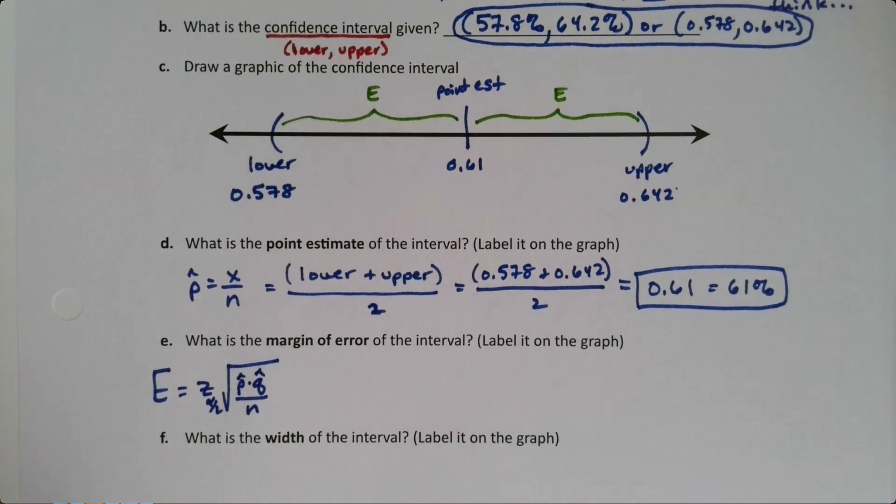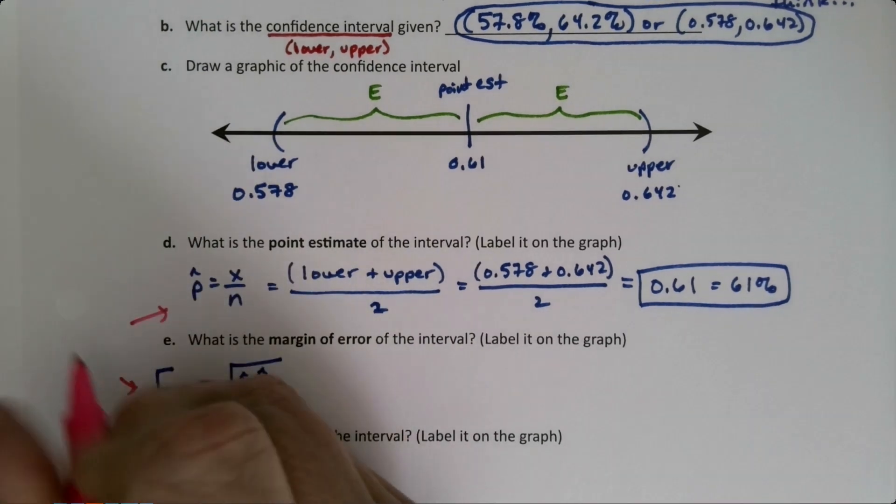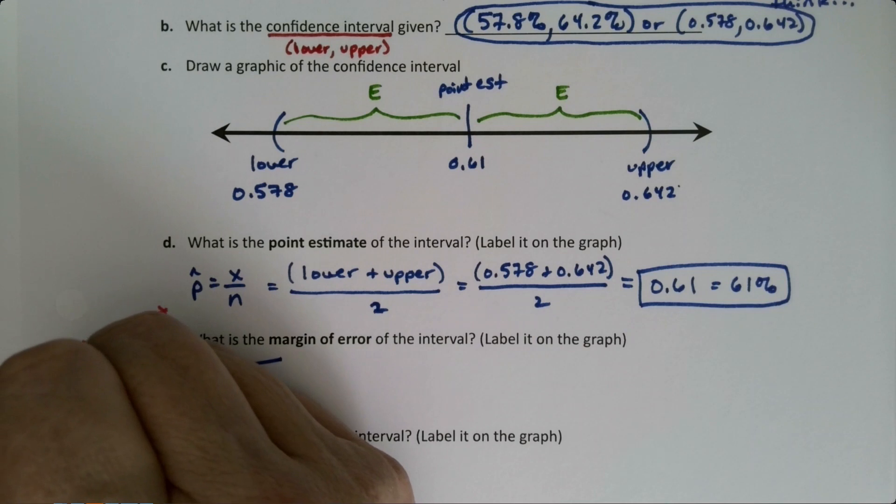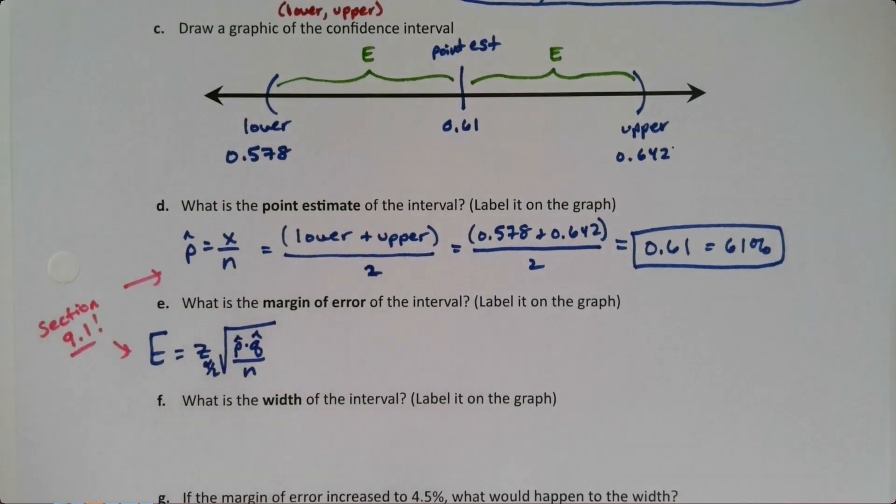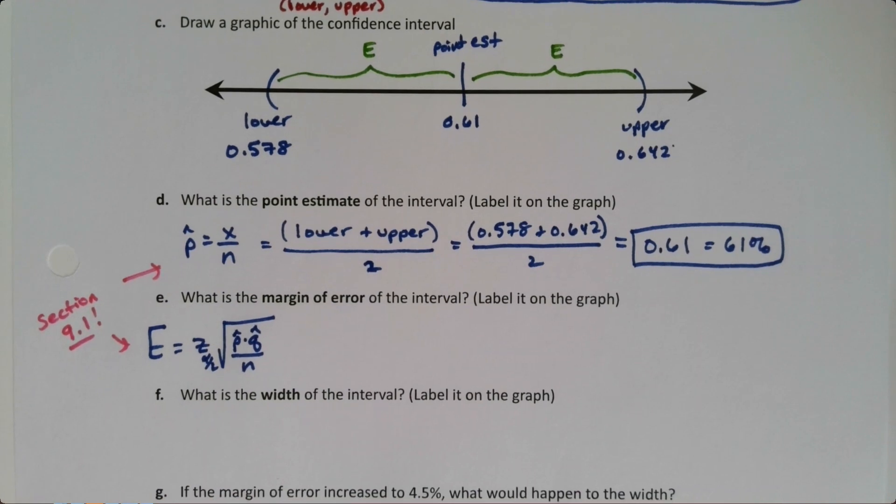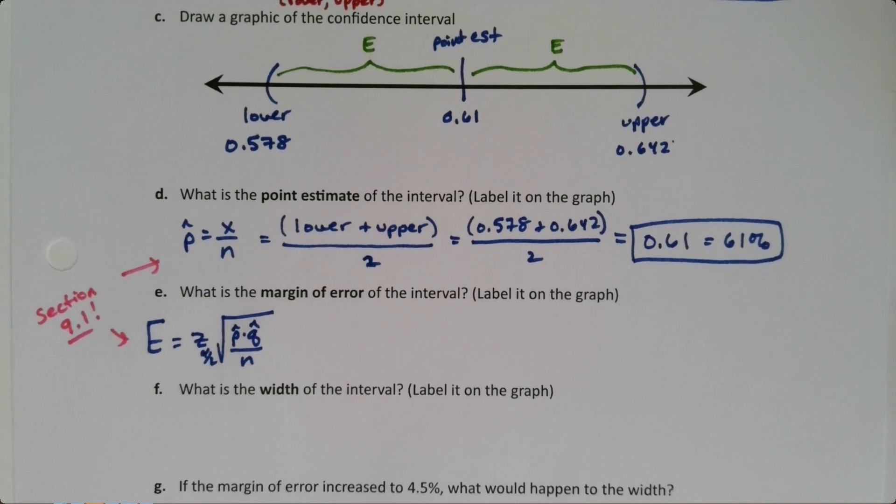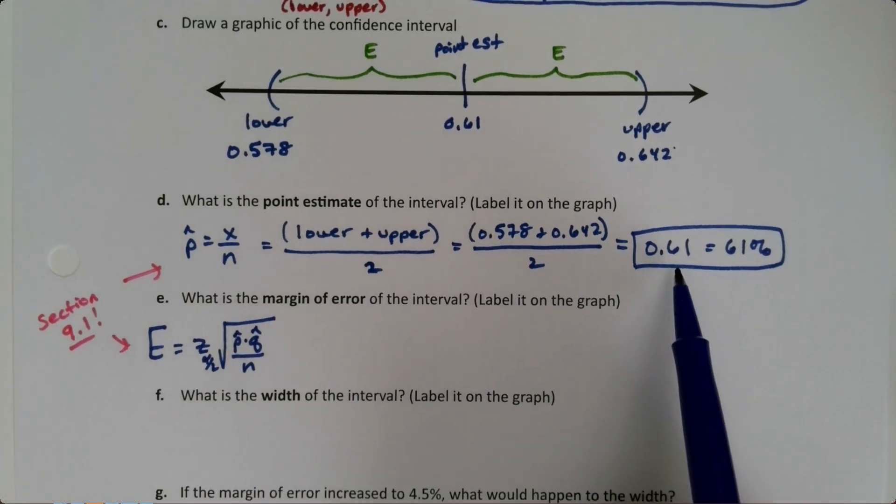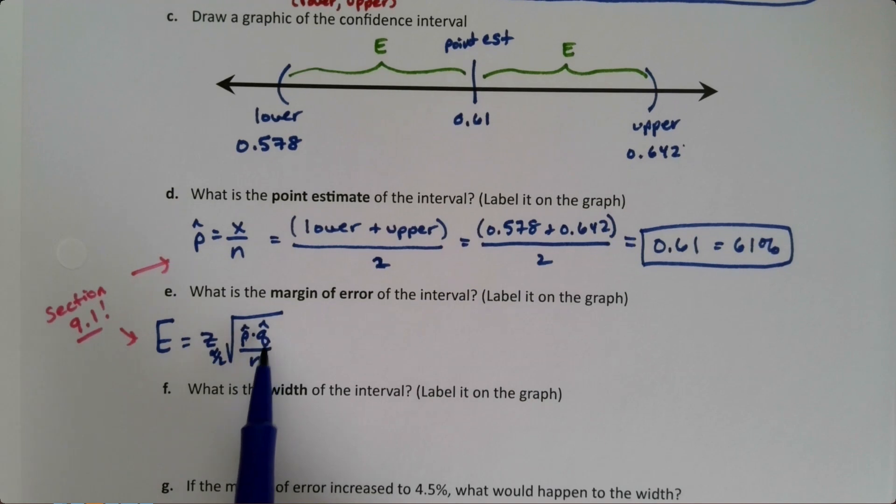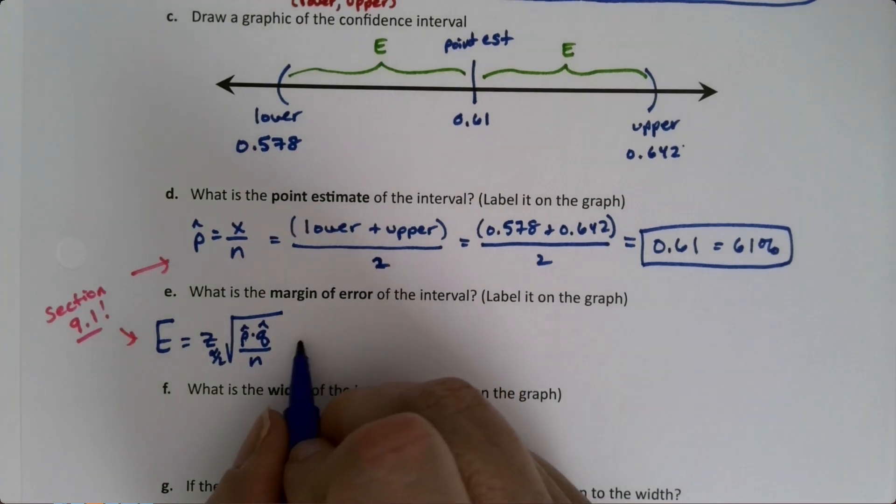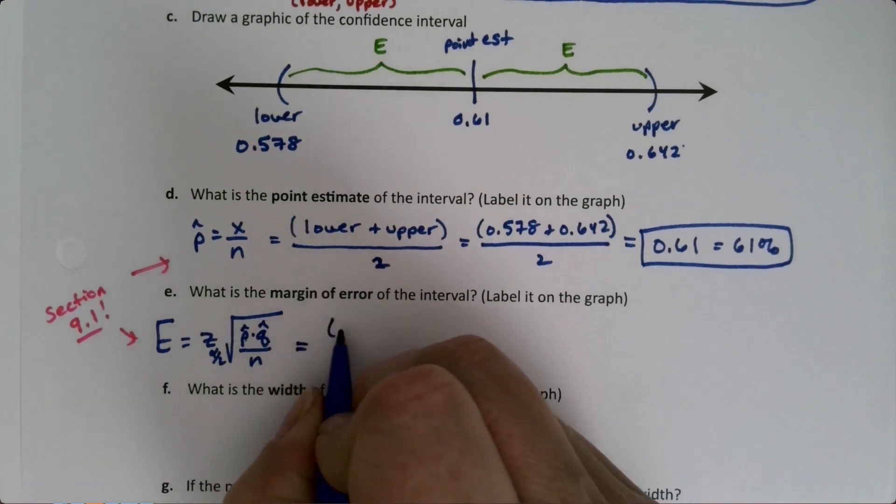All right, so both of these are from section 9.1. Okay, but it's not going to do us any good. I mean, well I guess it could now, but I don't know what confidence we have, it seems like a lot of work. I don't know what n is. I know p hat now, p hat is 0.61, so I could do p hat q hat and I can get z from my confidence, but I don't know n. I don't know how many people they polled, so I'm going to have to use the other way, which is the upper minus the lower divided by 2.